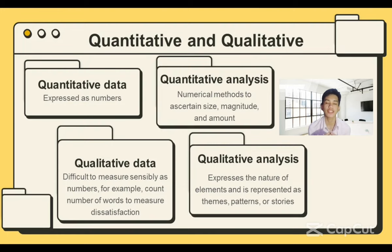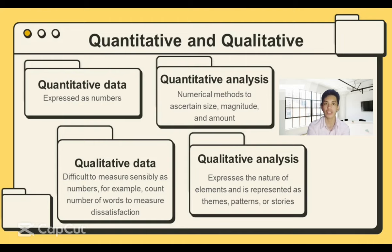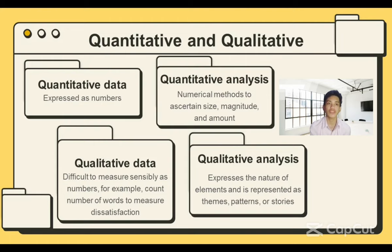Examples of qualitative data presented as words and images include descriptions, quotes from interview subjects, activity, vignettes, and photographs. Although it is possible, presenting qualitative data in numerical form is not always helpful. It is a common misconception that some data collection techniques can only produce quantitative data while other techniques can only generate qualitative data.